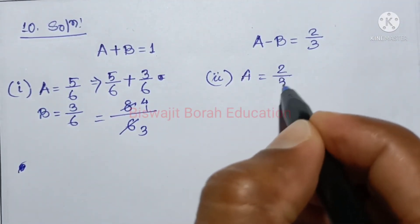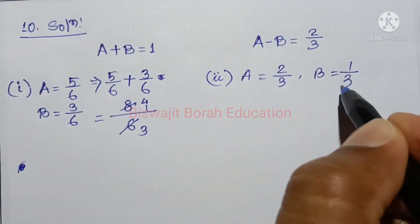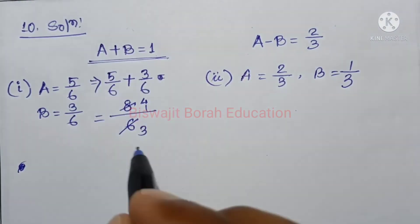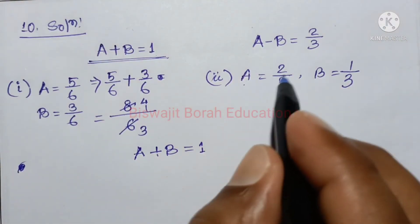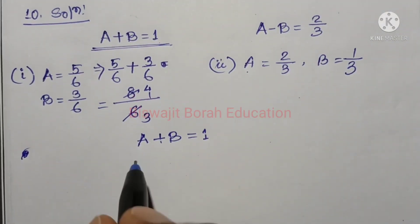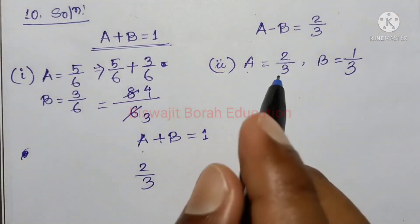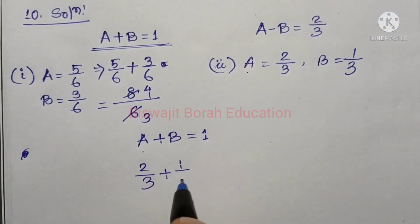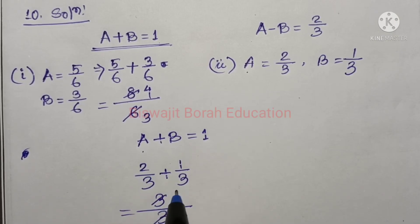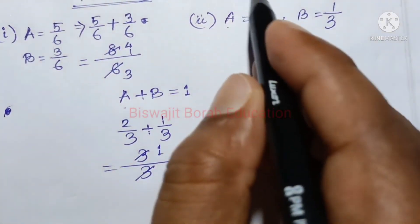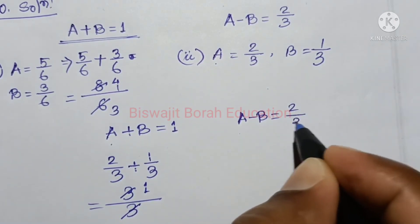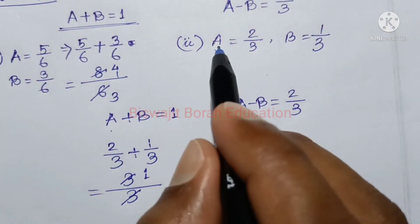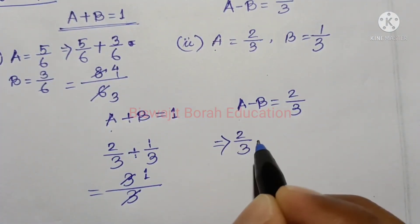Given a minus b equals 2 by 3 and a plus b equals 1: so a equals 2 by 3 and b equals 1 by 3. Checking: a plus b equals 2/3 plus 1/3 equals 1. And a minus b equals 2/3 minus 1/3 equals 1 by 3. So a minus b equals 2 by 3, which confirms option 2.